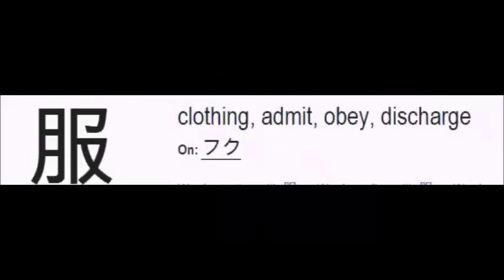The first kanji is Fuku, which means clothing. This kanji has 8 strokes. Please pay attention to the stroke order: 1, 2, 3, 4, 5, 6, 7 and 8. There is no Kunyomi reading for this kanji. Only the Onyomi reading, which is Fuku. The meanings associated with this kanji are clothing, admit, obey, and discharge.